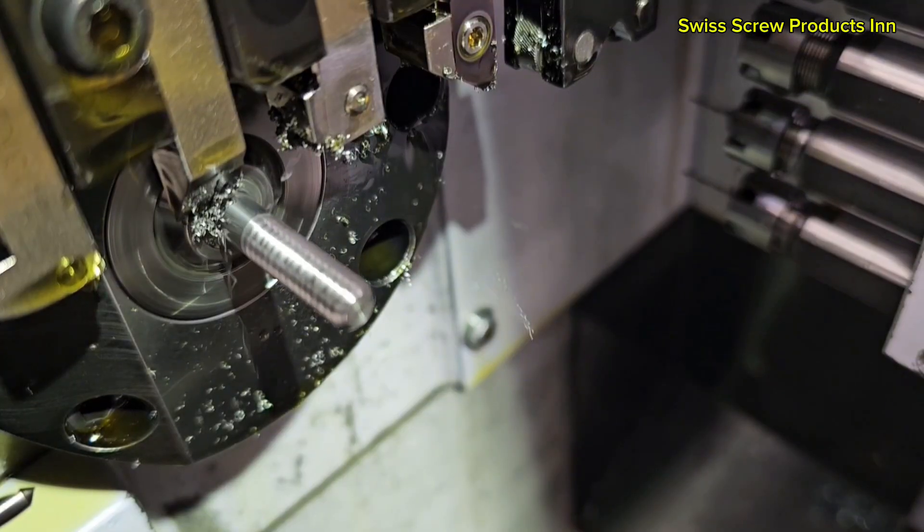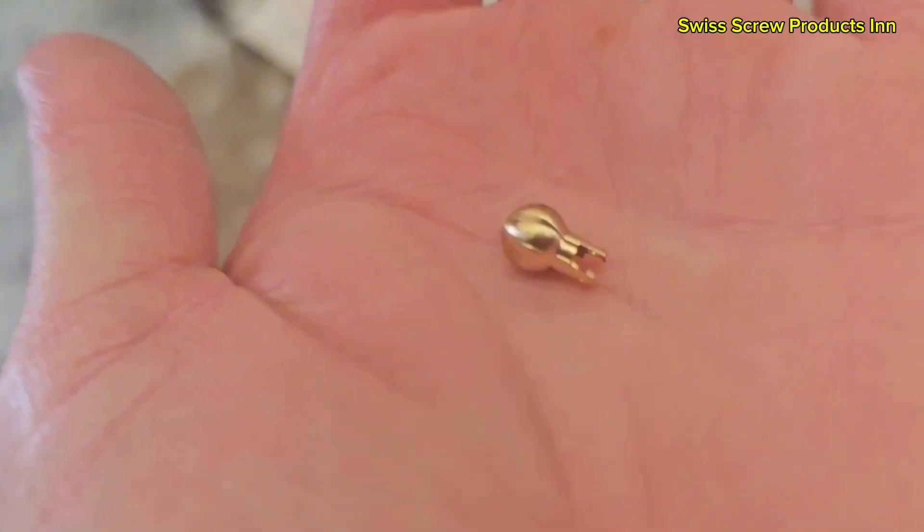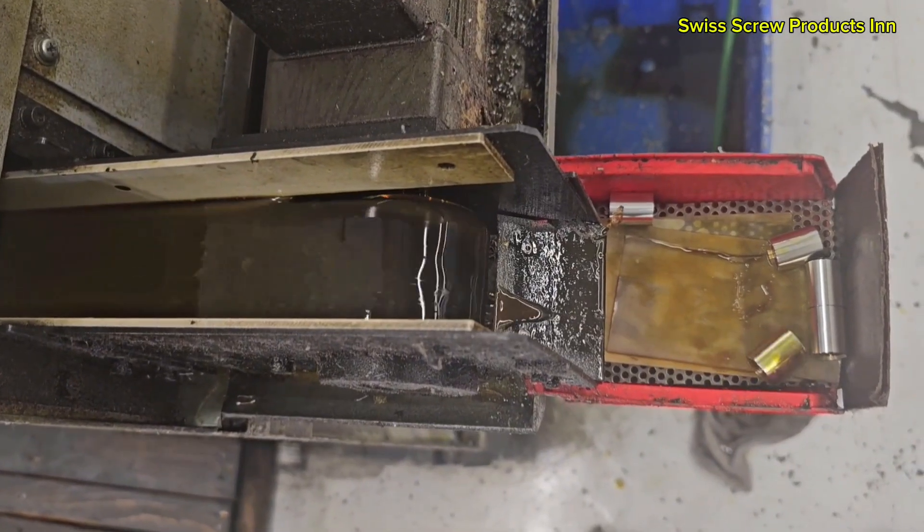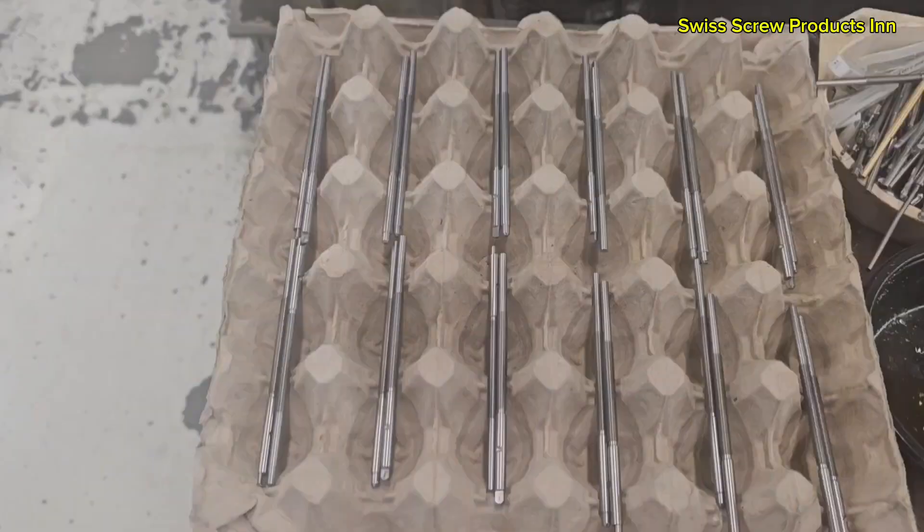After machining is complete, the part is parted off, dropping into a collection tray. The bar then advances and the next cycle begins immediately. All of this happens in continuous automated cycles, ideal for high volume production.